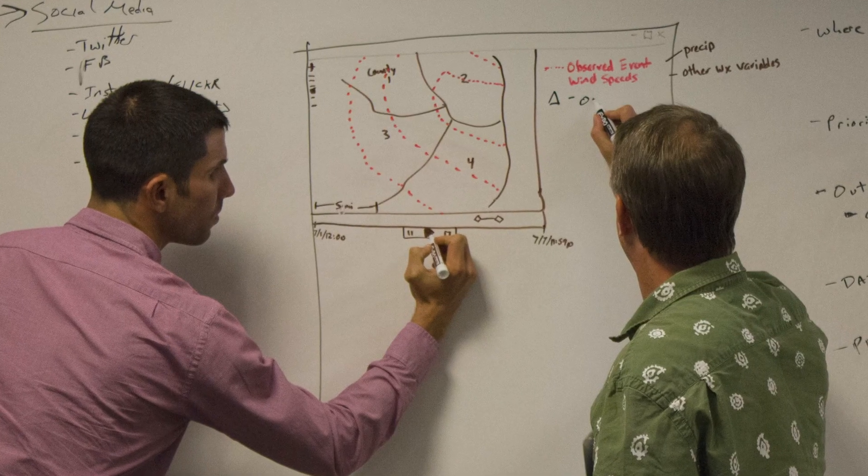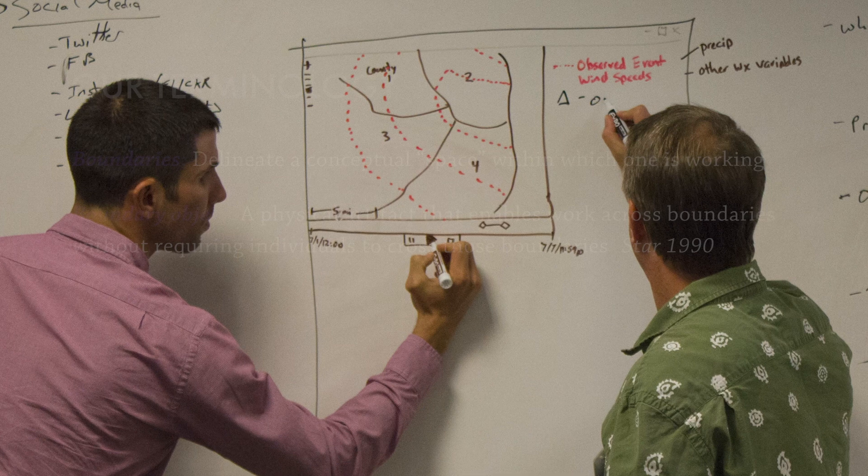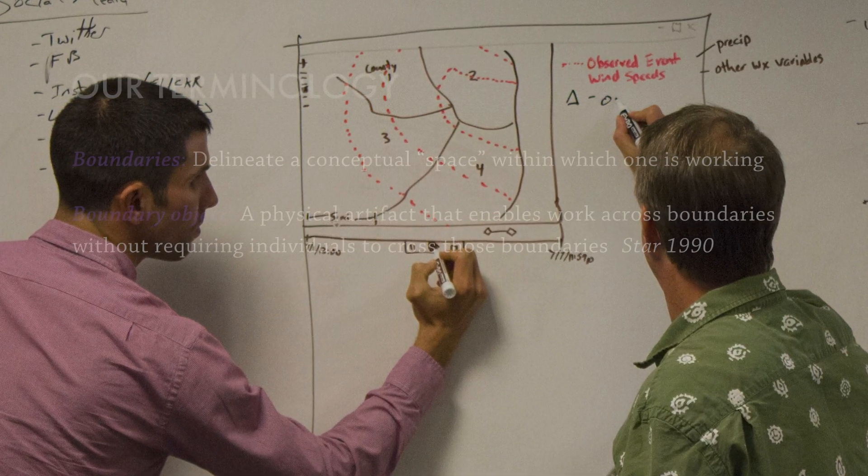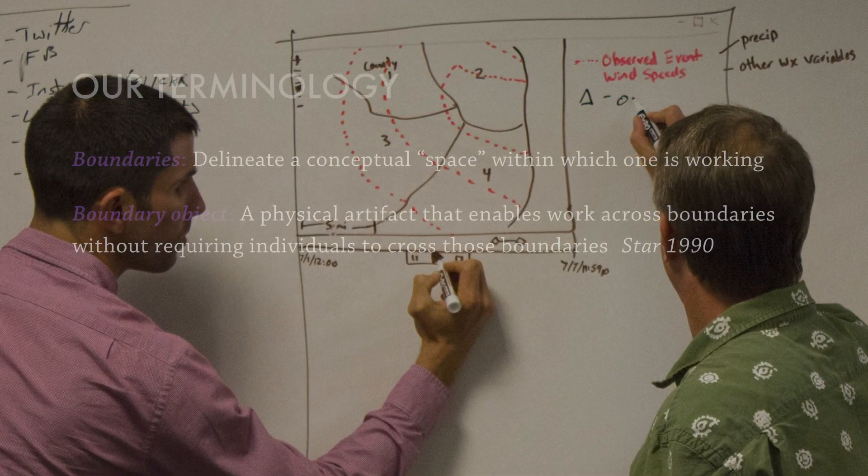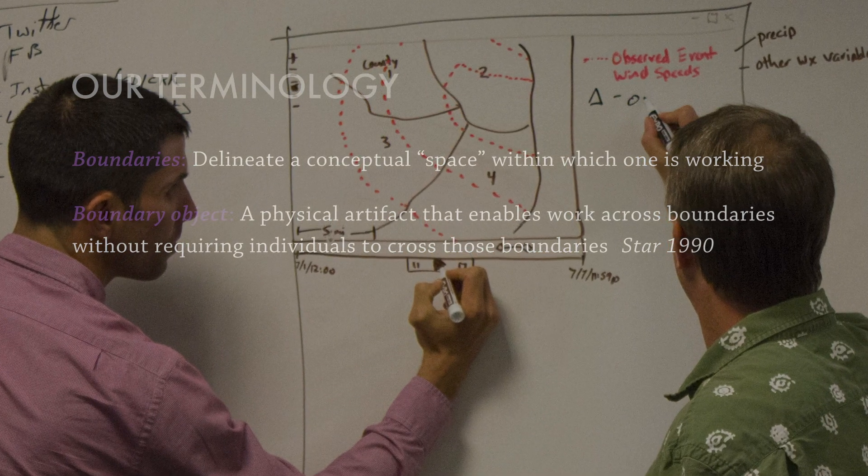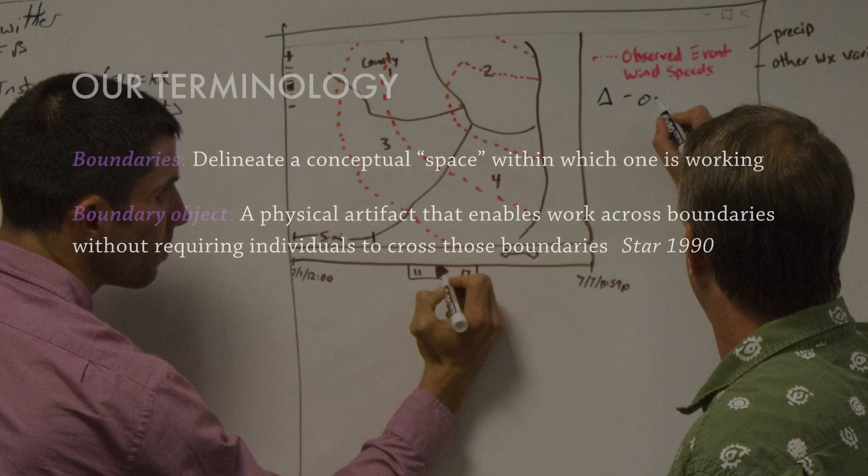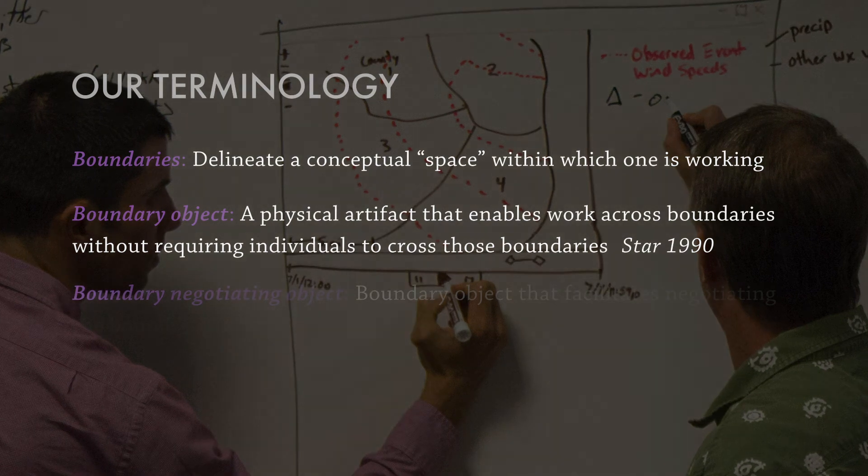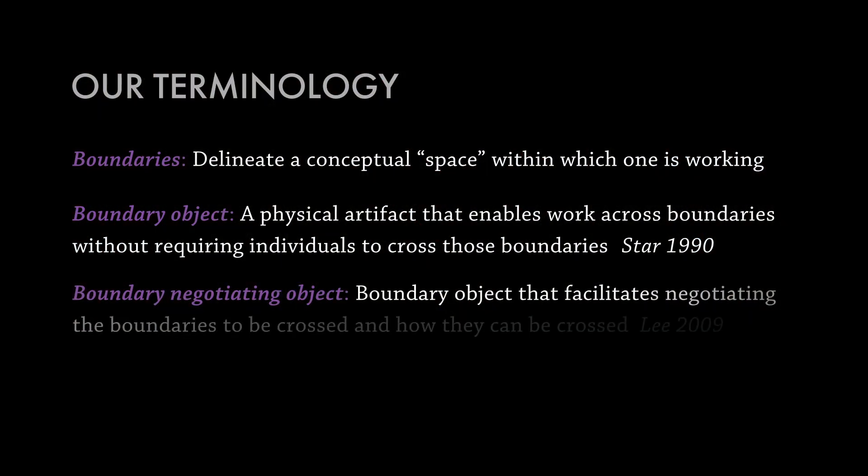So you can think about an integrated conceptualization, an integrated framework, that's a product of working together that then can become a boundary object. But first you have to generate it. And so there's been some research on boundary negotiating objects. So this is a boundary object that facilitates negotiating across the boundaries to be crossed, and how they can be crossed. And so you negotiate that boundary object that's going to let you cross the boundaries of different disciplines.